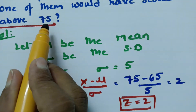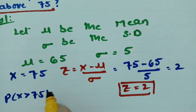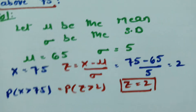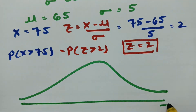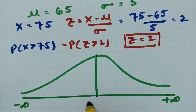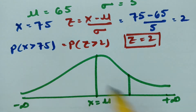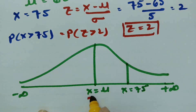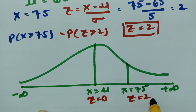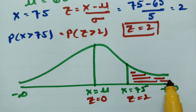Above 75 means P(X > 75), which in terms of z we write as P(Z > 2). On the normal curve, this extends from z = 2 to plus infinity. Instead of calculating that directly, we use: P(Z > 2) = 0.5 minus the area between z = 0 and z = 2.